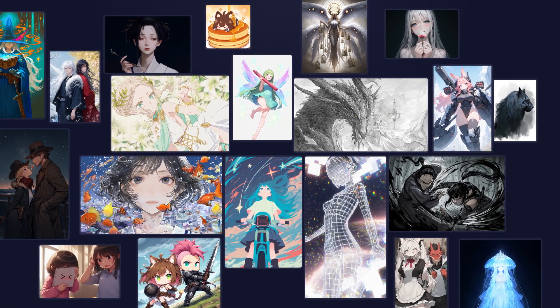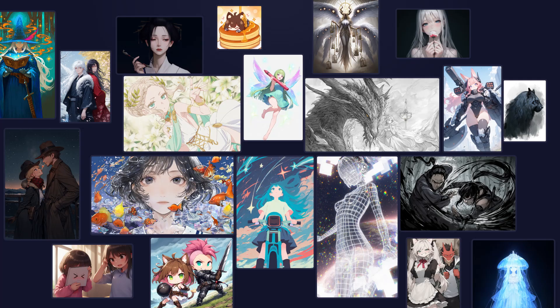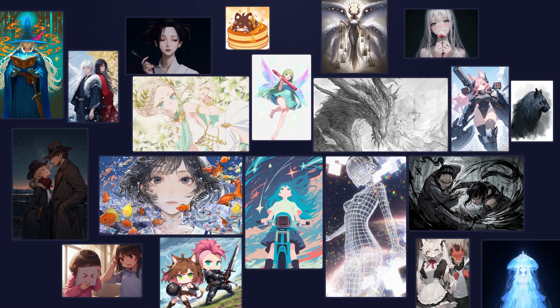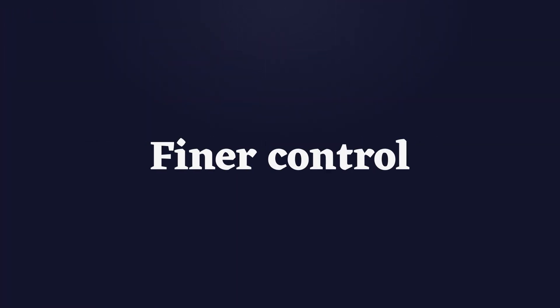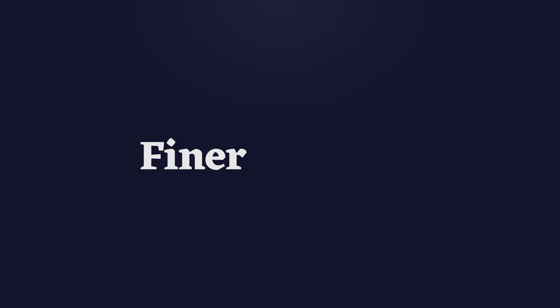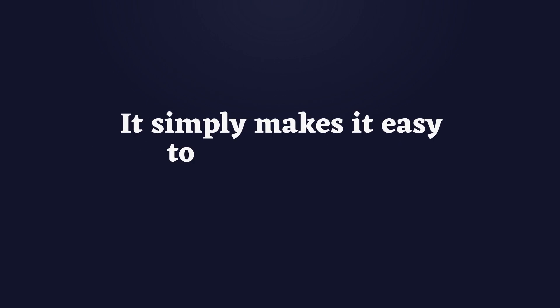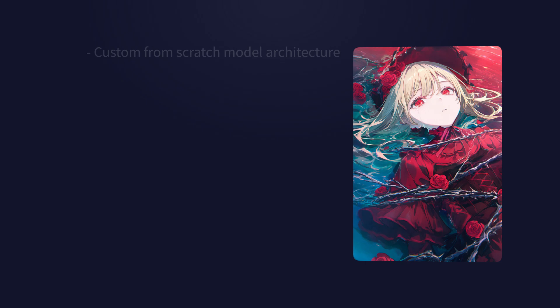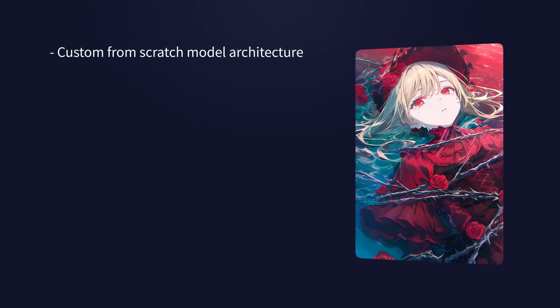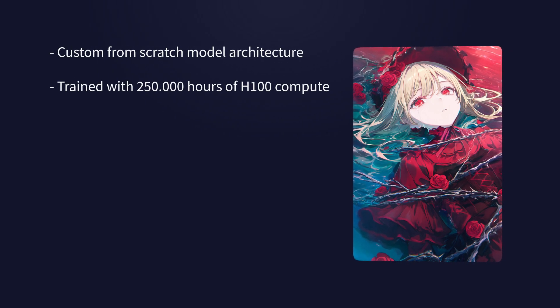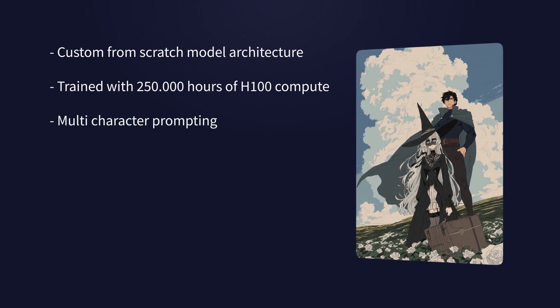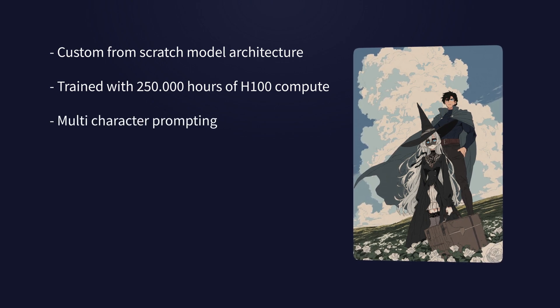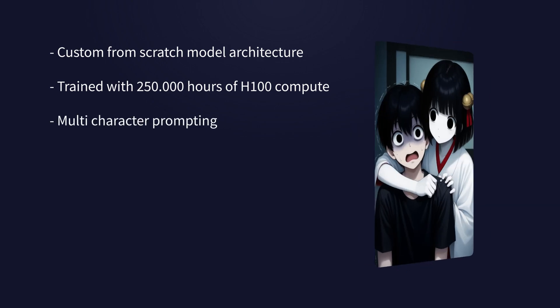V4 is our most advanced image generation model ever. We've made the model smarter, capable of generating higher quality images, while giving users finer control over their creations — it simply makes it easy to create exactly what you're imagining. To achieve this, we trained V4 from the ground up with 250,000 hours of H100 compute. This model is designed to fully support our new features, while delivering significant improvements in both fidelity and detail.